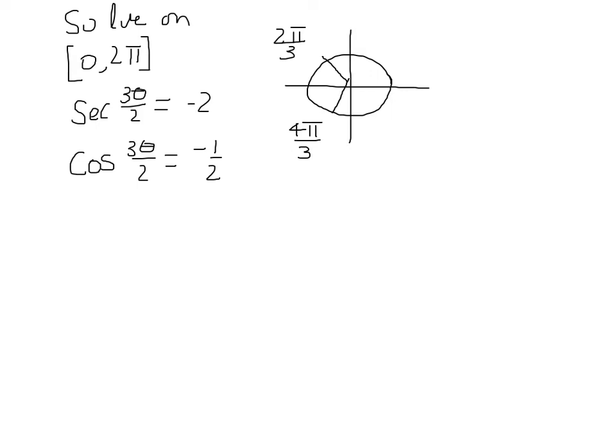The problem says that we're supposed to solve secant of 3 theta over 2 equal to minus 2 on the interval 0 to 2 pi. What we know about the secant is that it is the cosine flipped over, so we would find the same result where the cosine of 3 theta over 2 is minus 1 half.